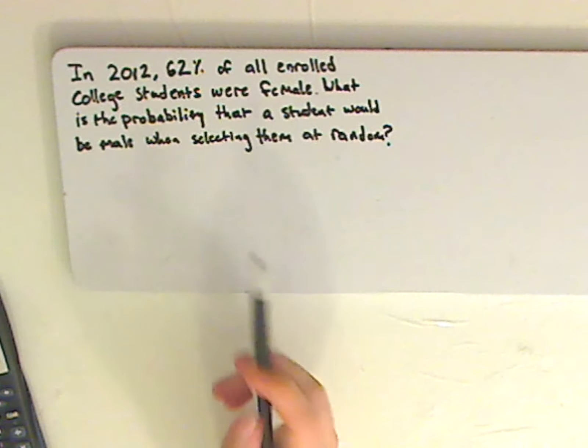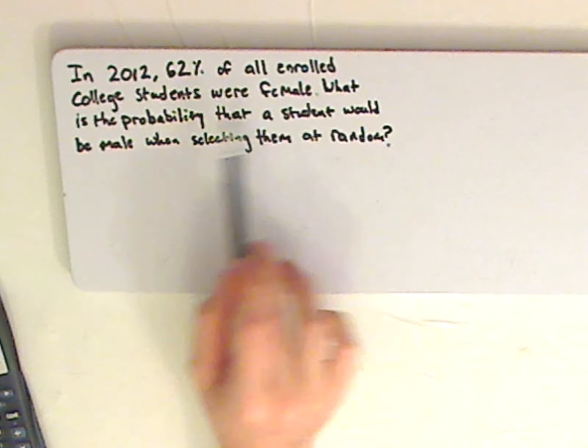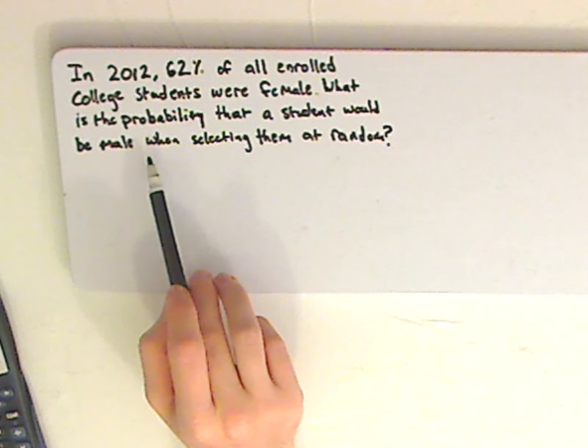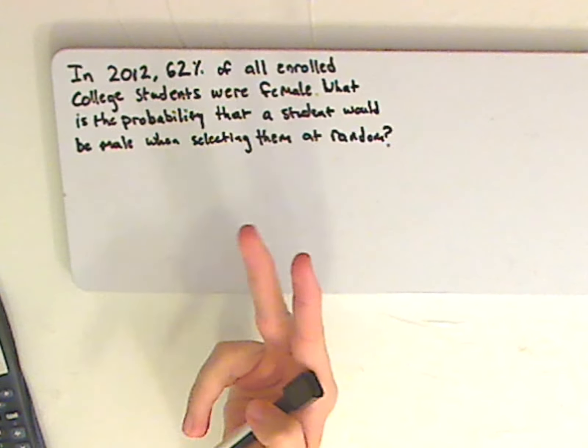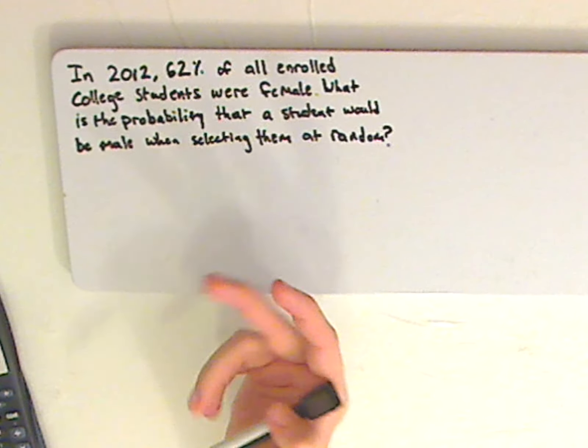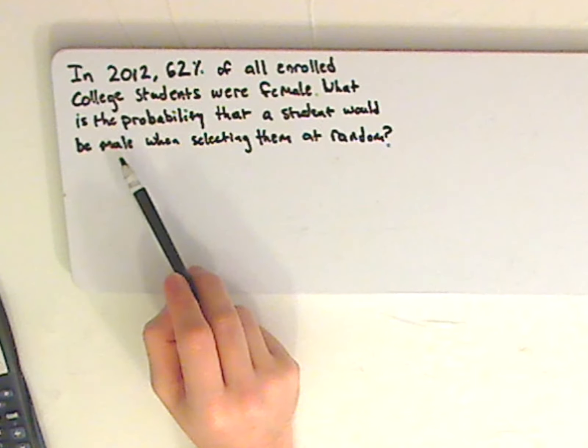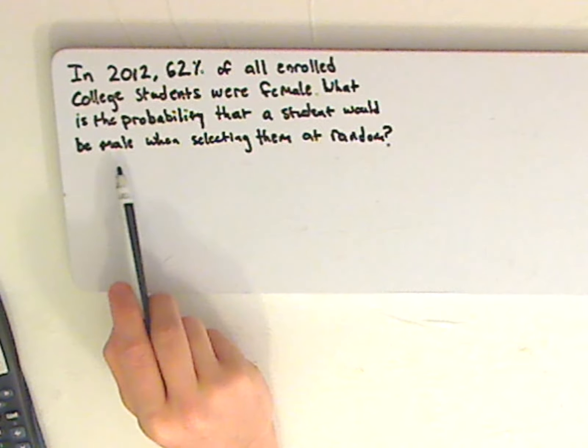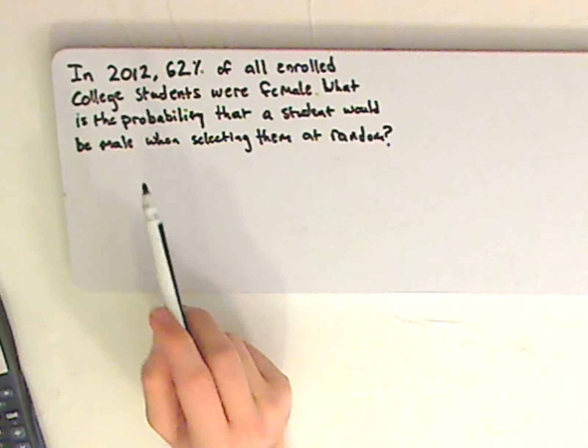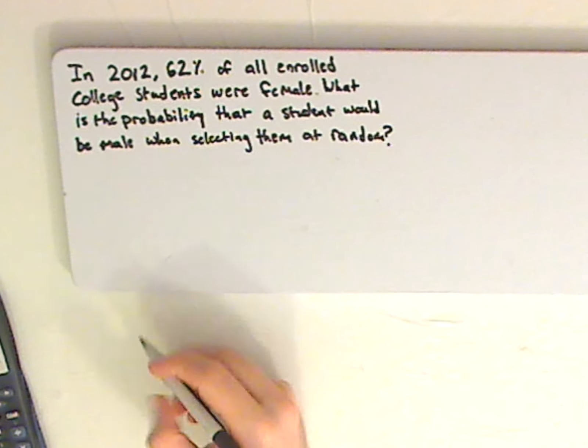Well, here you have female and then you have the complete opposite, which is male. And there's only two groups, right? So you have female and not female, which is male. Which means that you're going to use the complementary probability rule.